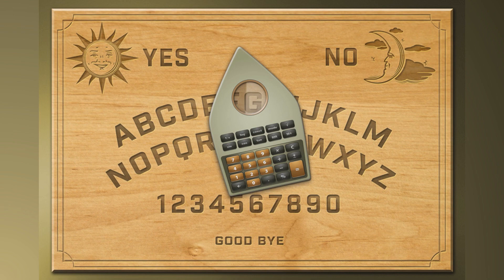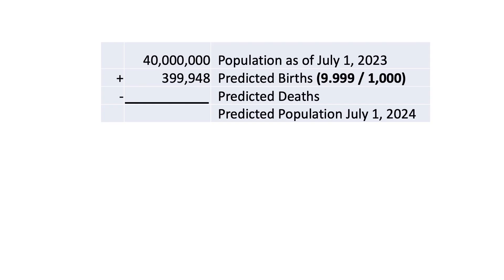That is why I call guessing how long any given trend will continue a dark art. You might as well consult a Ouija board. If we assume the 2024 birth rate is three-quarters of a percent lower than the 2023 birth rate, that means to find the number of expected births in 2024, we would take the 40 million people times a birth rate of 9.99 per 1,000 people, which gives us 399,948 predicted births. Because we are ignoring the people moving into or out of Canada, all we have left to do is predict the number of people that are going to die in Canada over the next 12 months.